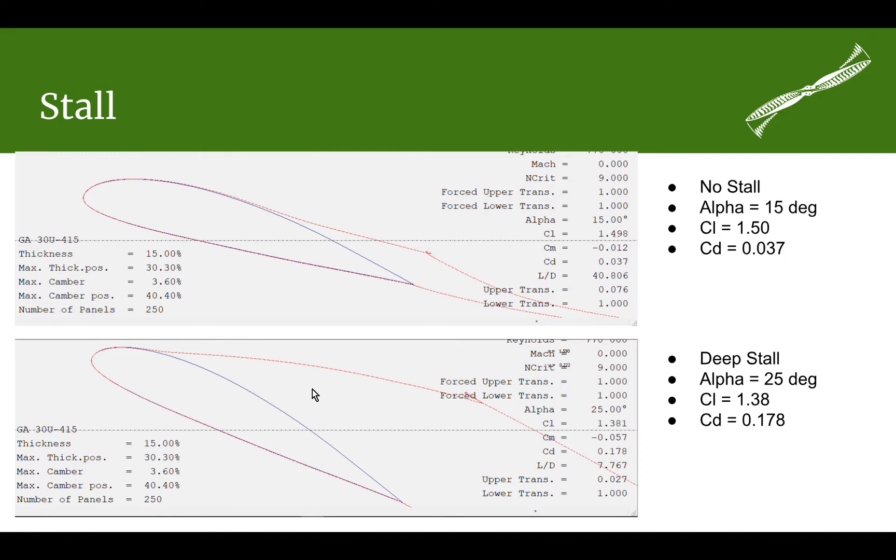And just as a quick aside, notice this term here, this is the coefficient of drag. Like coefficient of lift, it's just a measure of how much drag the wing has. So at 15 degrees, we've got 0.037, but way into the stall, we have much, much higher. It's higher by a factor of 4. So we've increased the drag on the wing by 4 times the value we have up here at 15 degrees.